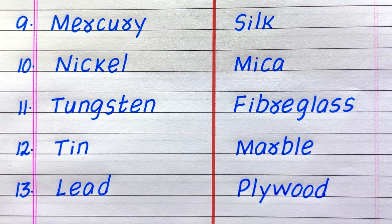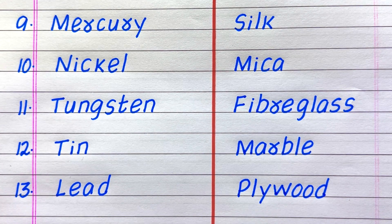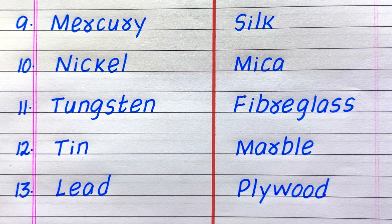9th example of a conductor is mercury, 10th nickel, 11th tungsten, 12th tin, 13th lead. 9th example of an insulator is silk.